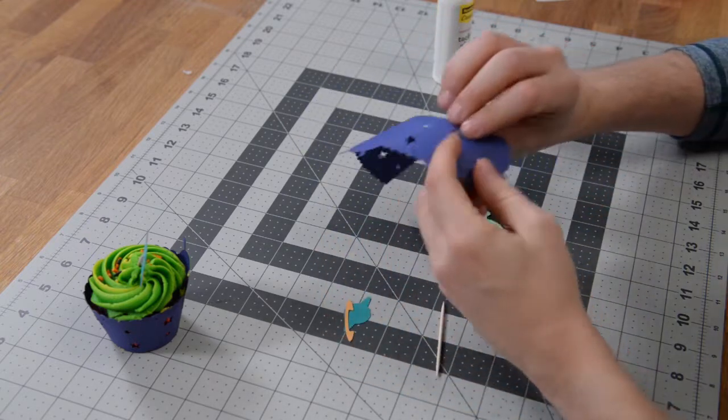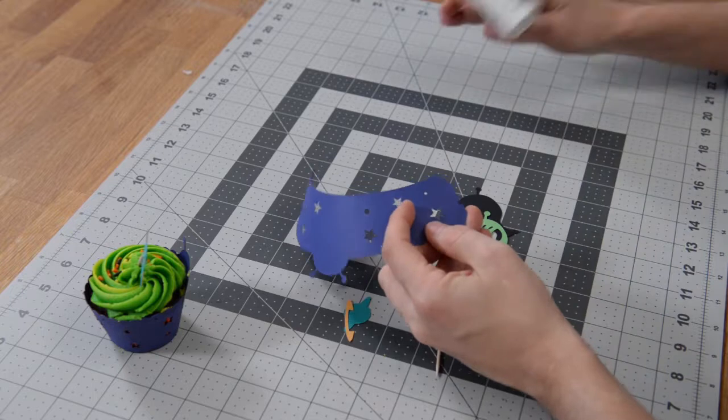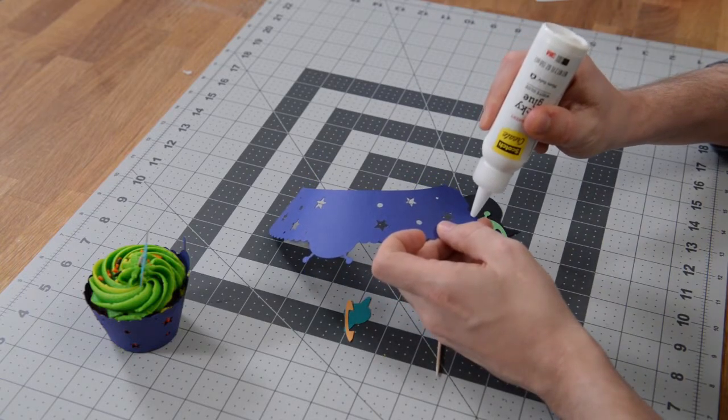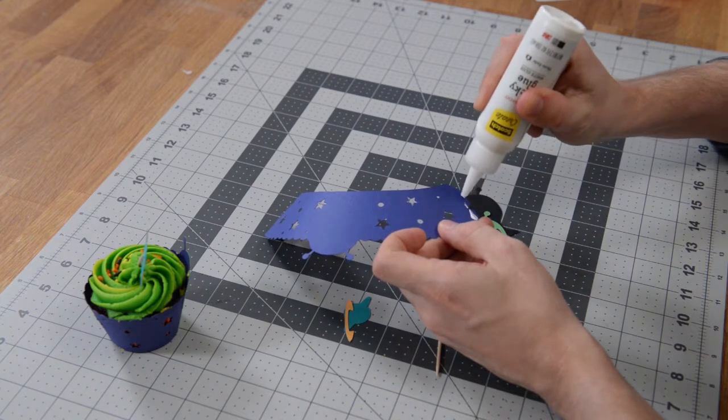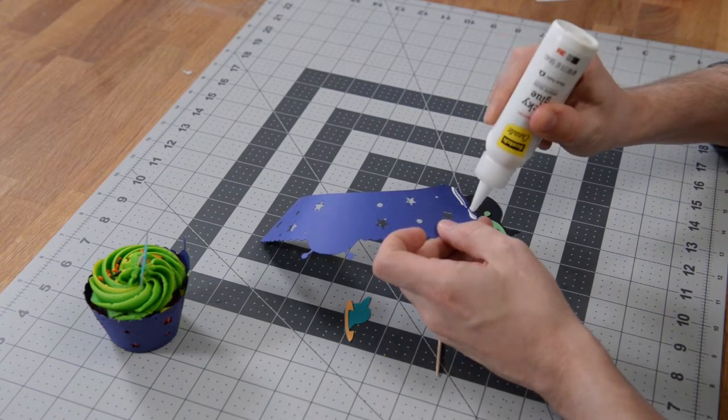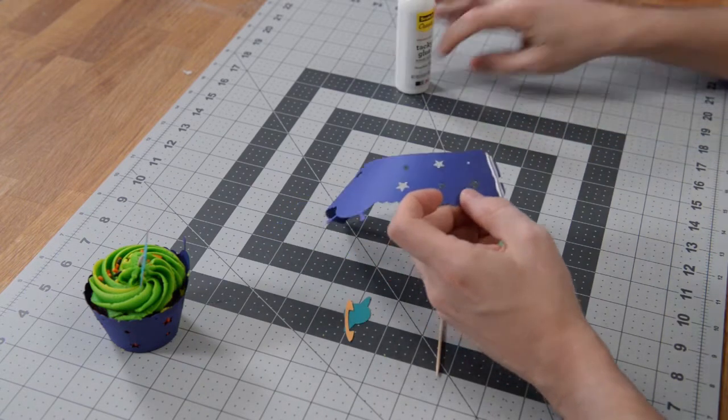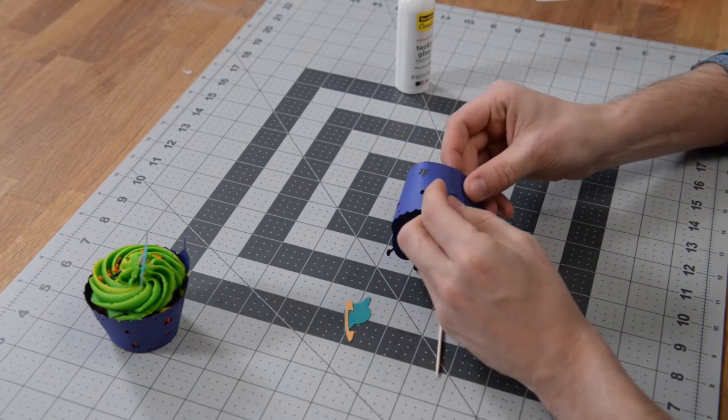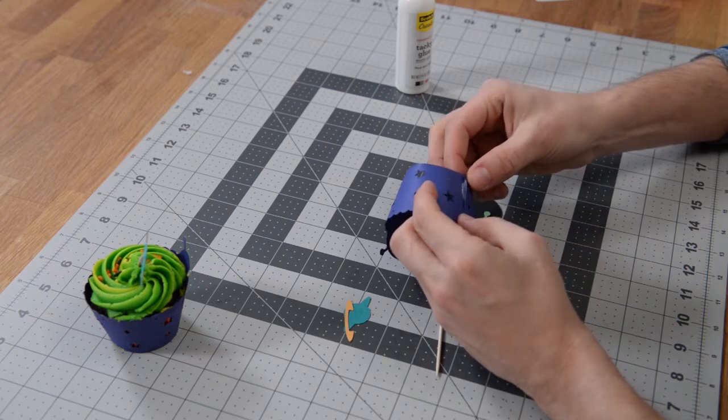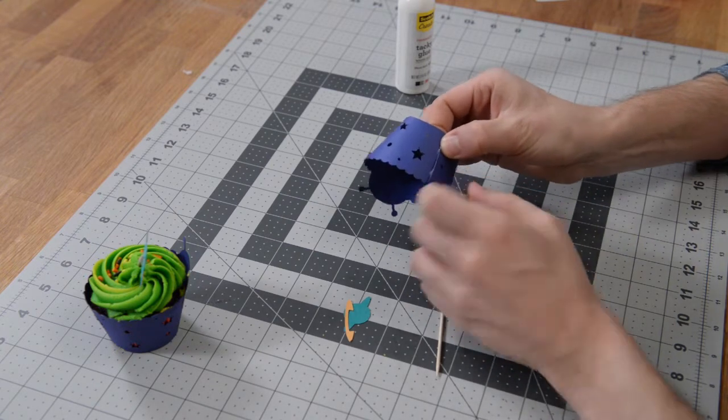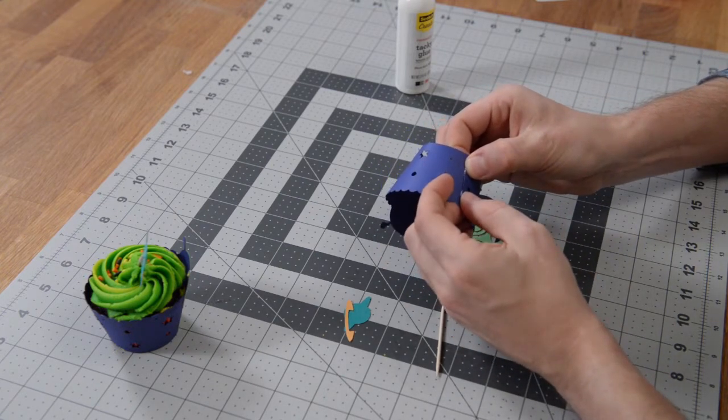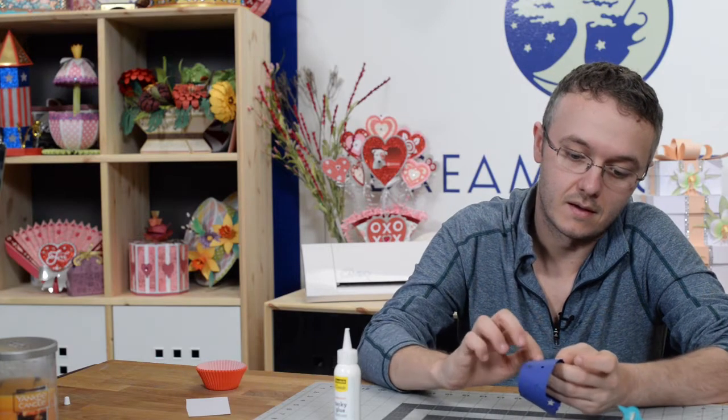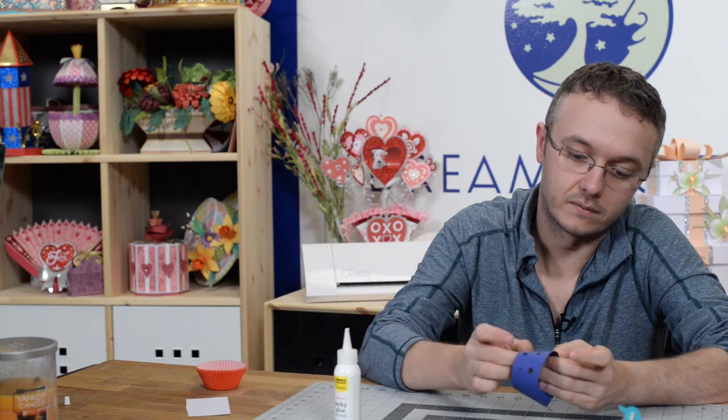Then there's a little tab here. You don't actually need to bend that - it's just a guide to help you with the placement of the glue. So you're going to put a little bit of glue just behind that tab and match that up. You can see that this little hole here matches up with the half hole on the tab there.